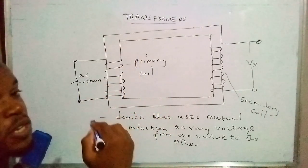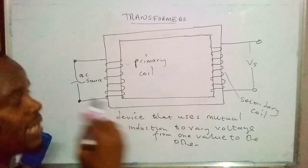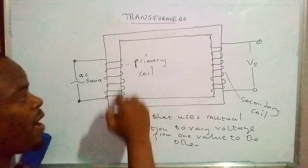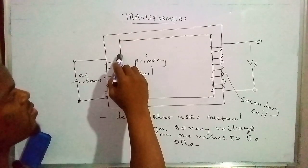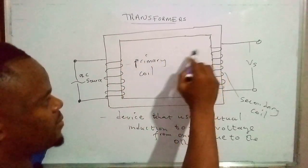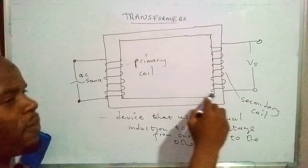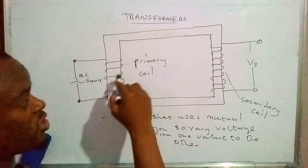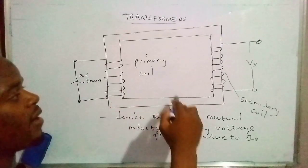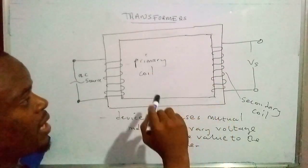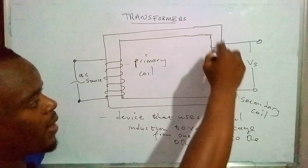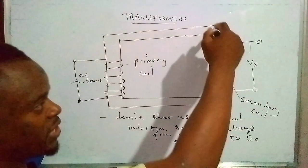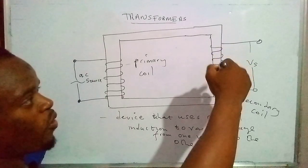This magnetic field is made up of what we call magnetic field lines, and that's the magnetic flux. As it keeps on changing or varying, those magnetic field lines extend up to the far end, covering the secondary coil. When the magnetic flux keeps on changing and cuts the secondary coil, an electromotive force is induced in the secondary coil and current flows.